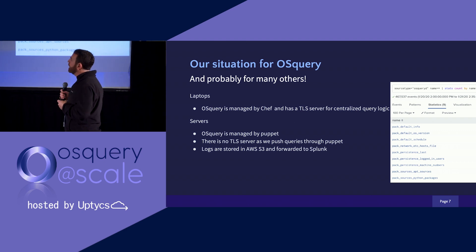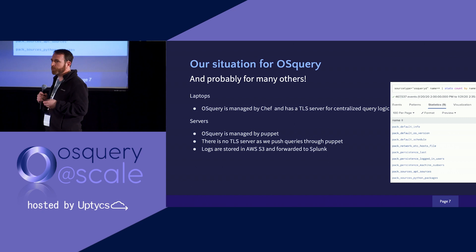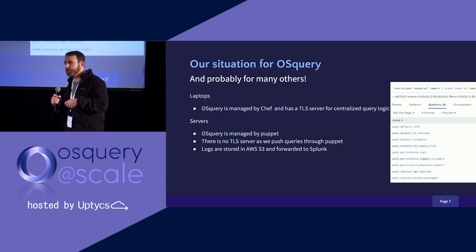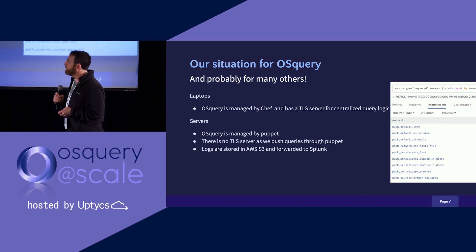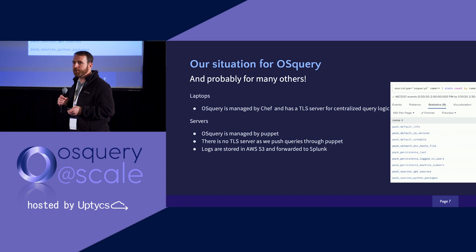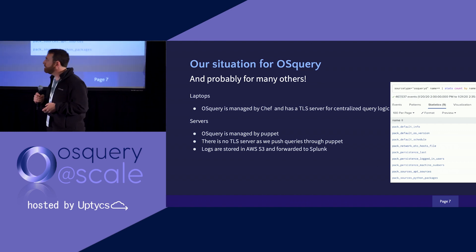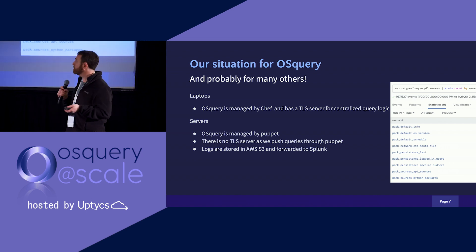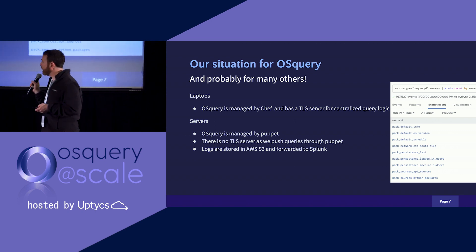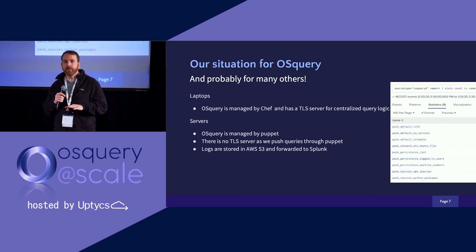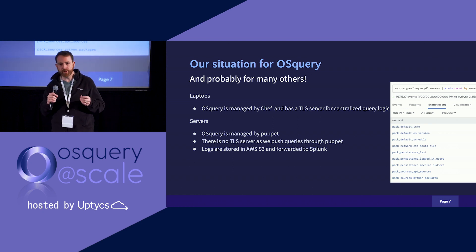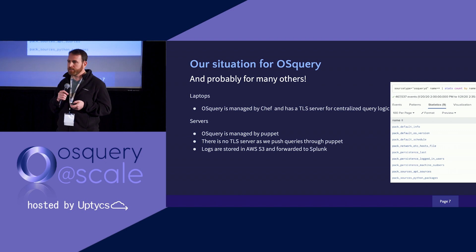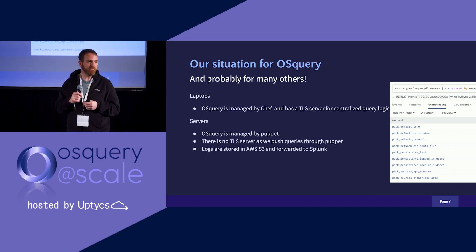Right now we have two totally separate and different types of OSquery deployments — we had one prior that we deprecated. On our laptops we went to a much more remote architecture this year and had some challenges with how we were doing OSquery before, so we did go to a commercial OSquery for laptops. We manage all the machines and agents with Chef, and it goes to a traditional TLS server. On the server side it's a totally different environment — very ephemeral servers, most less than a week — and we deploy OSquery via Puppet out to endpoints and pull all the data down into S3, then forward it onto Splunk.